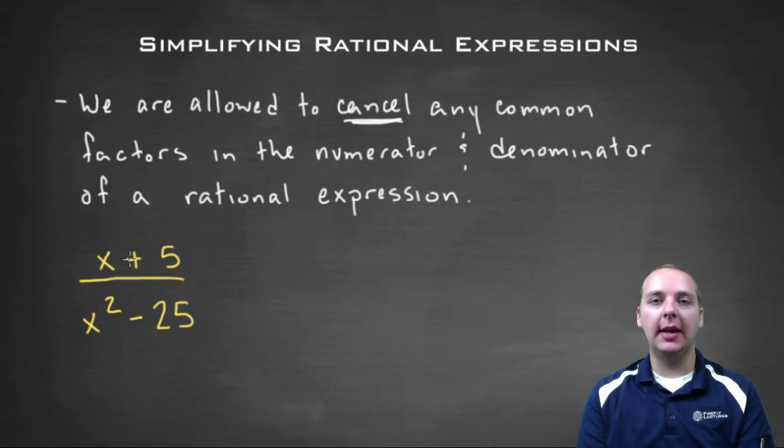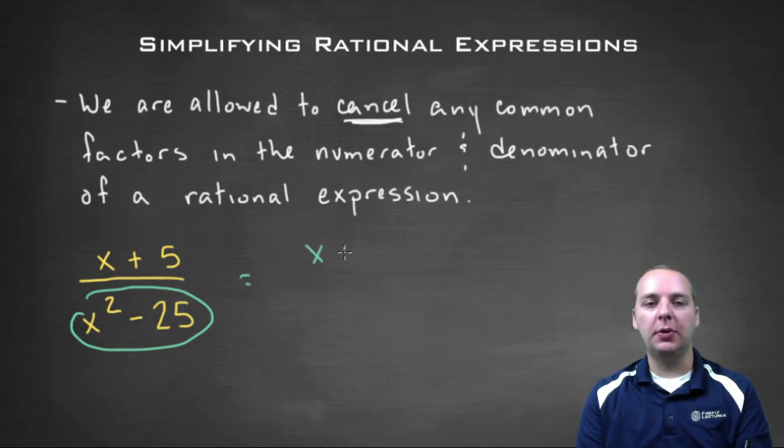So if you have something like x plus five divided by x squared minus twenty-five, what you can do is notice this denominator down here that'll actually factor. So you'd have x plus five, and since this is a difference of squares, you would have x plus five times x minus five.